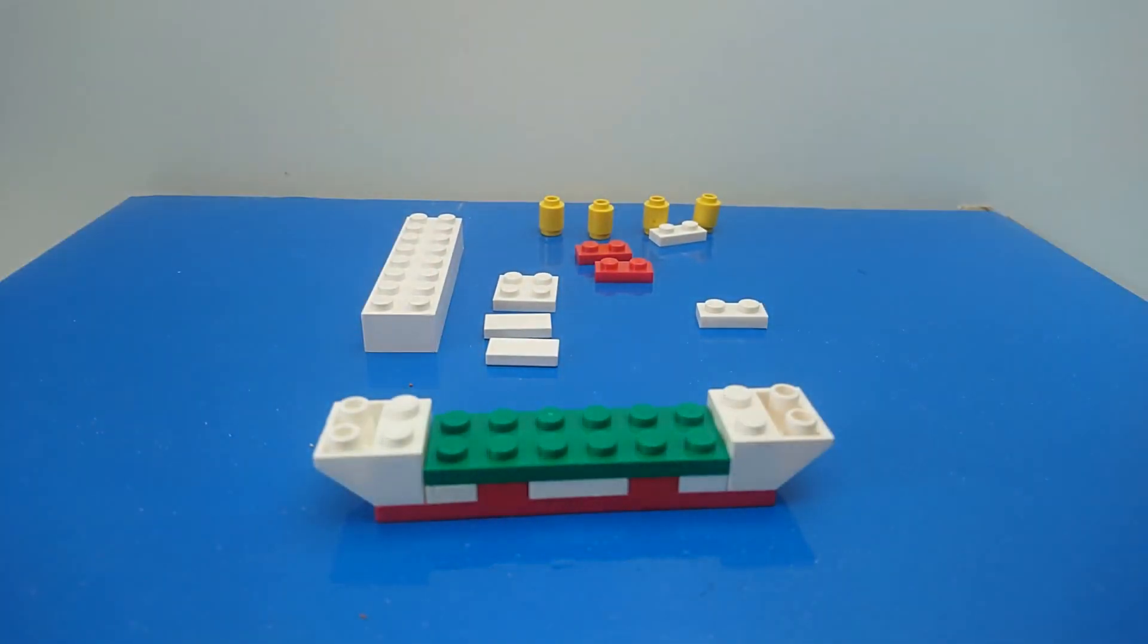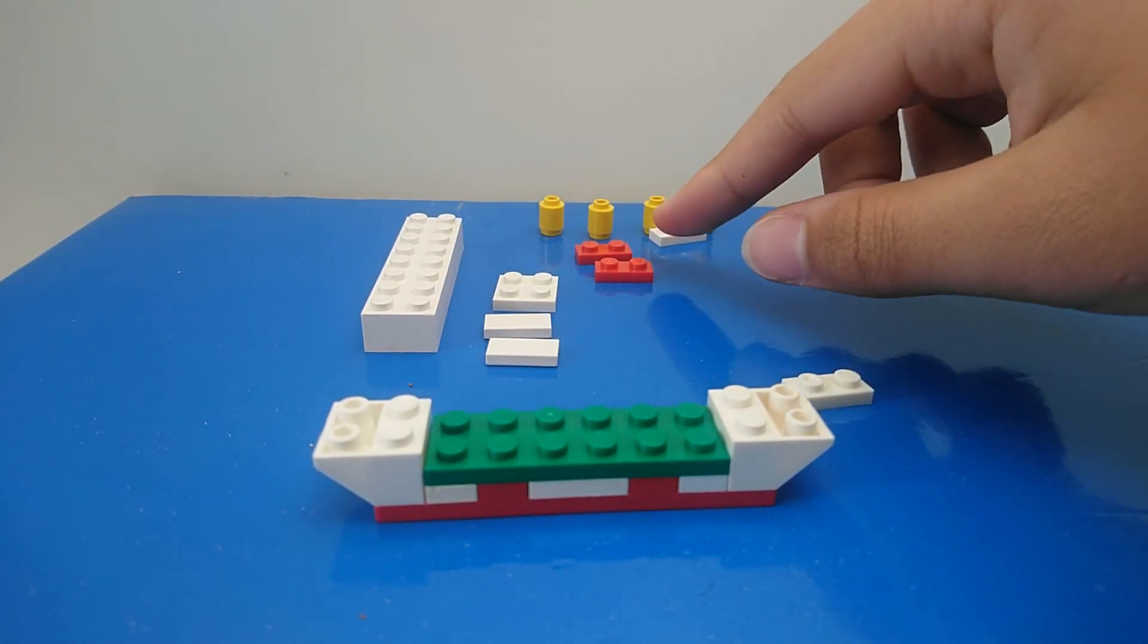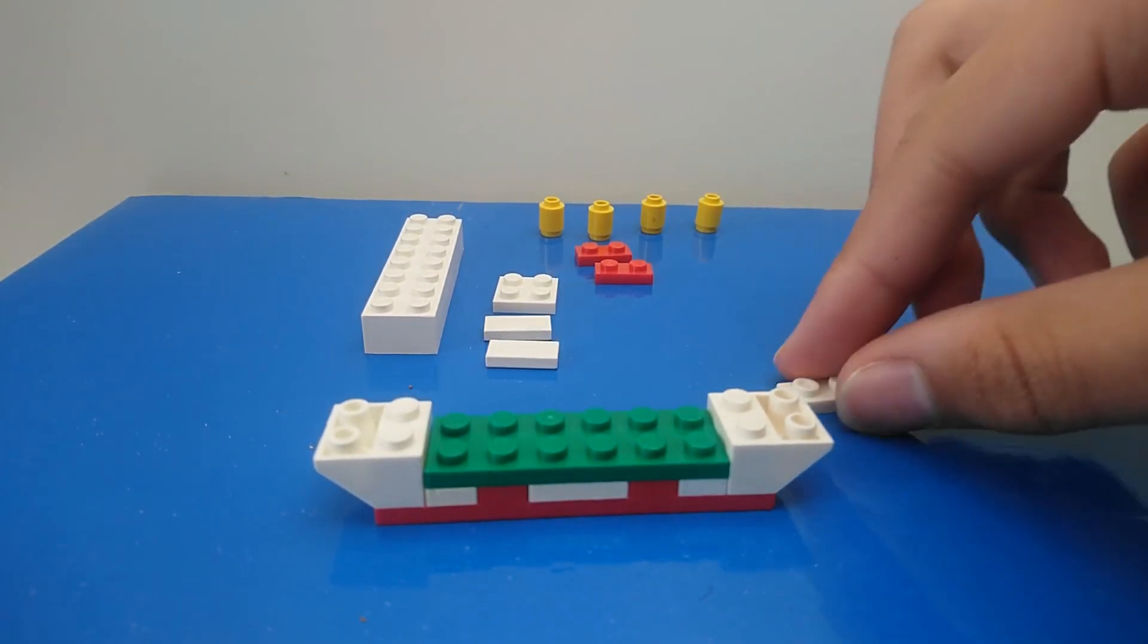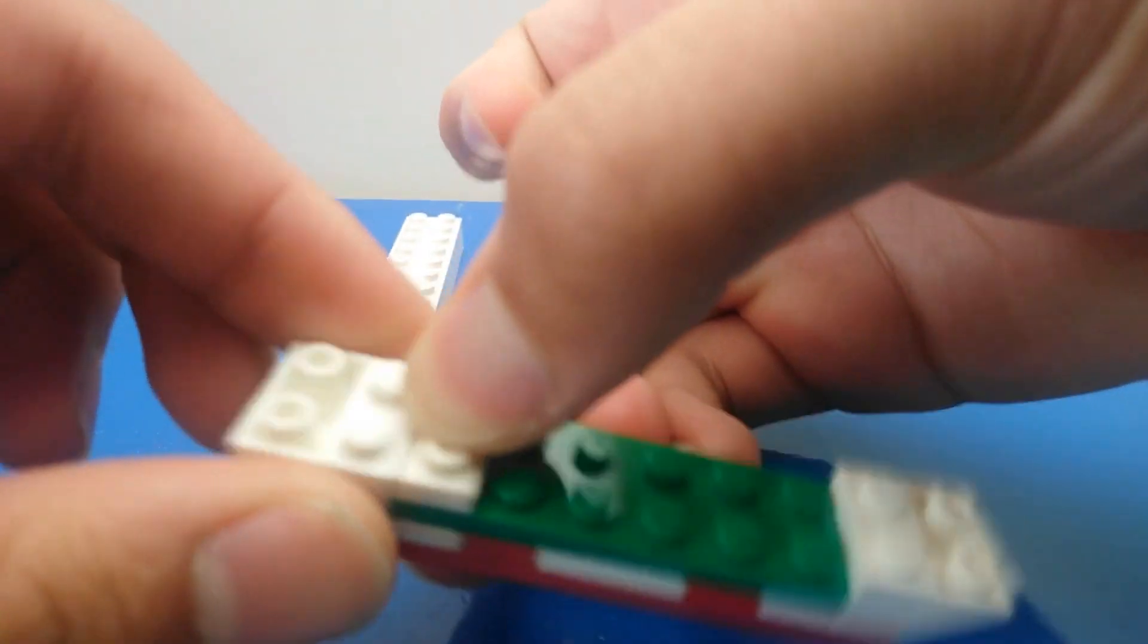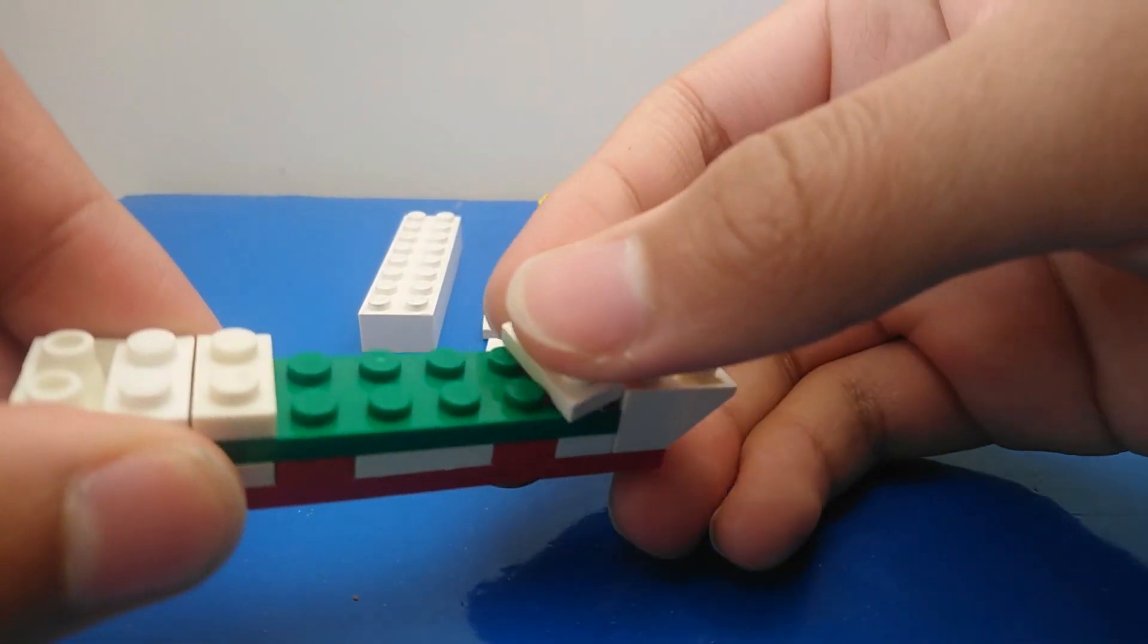Next is to take again our two of our 2x2 white plates, and we're going to place one right at the end as far as you can, and the other one at the other end.